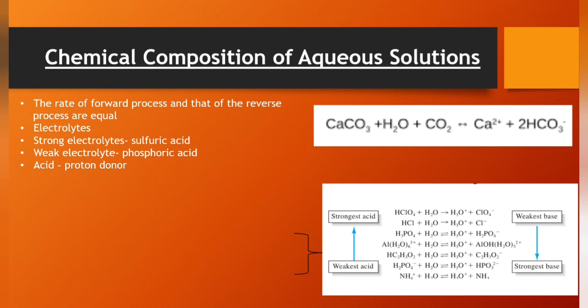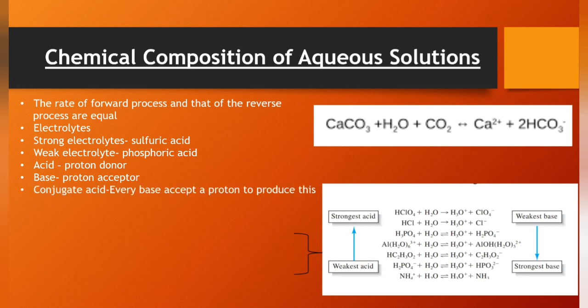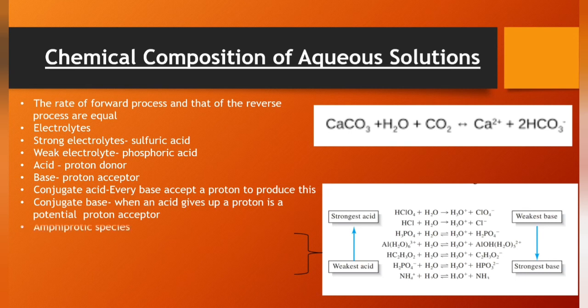According to the Bronsted-Lowry theory, an acid is a proton donor and a base is a proton acceptor. An important feature of the Bronsted-Lowry concept is the idea that the product formed when an acid gives a proton is a potential proton acceptor and is called the conjugate base of the parent acid. Every base accepts a proton to produce conjugate acids.